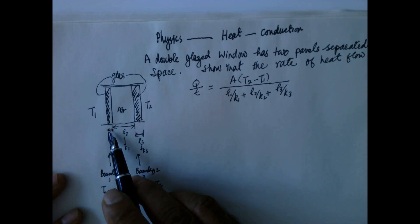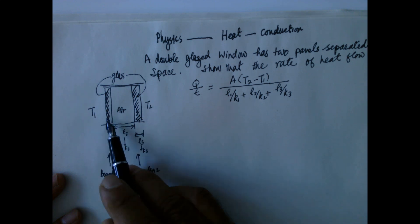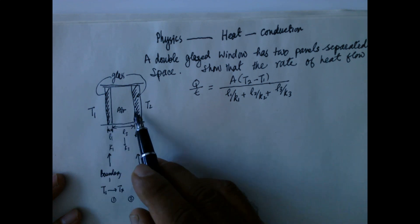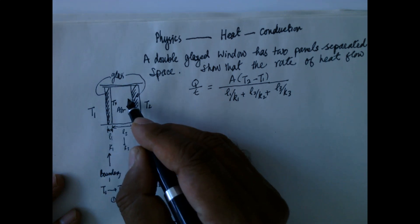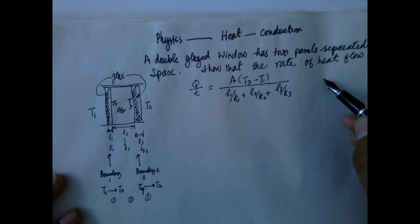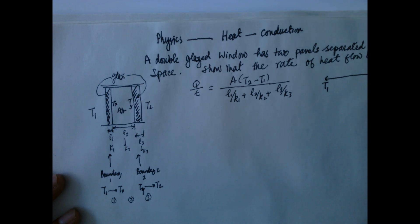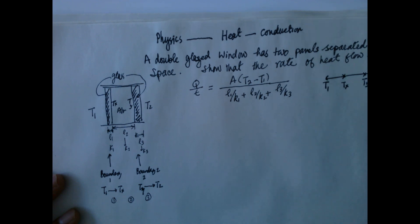This is the first boundary and this is the second boundary. The temperature on the left is T1, at the first boundary it is Tx, and at the second boundary it is Ty. On the right side the temperature is T2. So T2 is greater than T1, and Ty is greater than Tx.